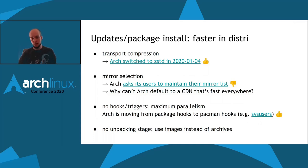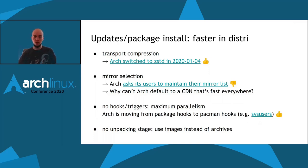We should also ensure a fast connection to the mirror where packages are located. In DISTRI we just have one mirror behind a CDN, but in Arch the users are asked to maintain their own mirror list. There are tools that make it a little bit easier, but it's one additional thing to take care of repeatedly. I'm wondering why Arch can't also default to a content delivery network that's fast everywhere — even in Debian, that's the status quo.